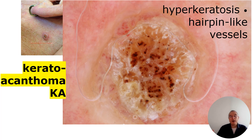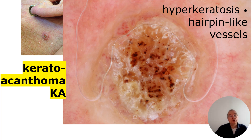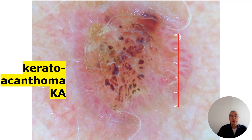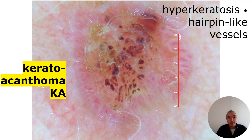When we hear the history of the patient, it is a rapid growing lesion over weeks — very rapidly. This is a keratoacanthoma. But we need to do surgery with histopathology. I will explain later. Also in early keratoacanthoma, you see this hyperkeratosis in the center and very distinctly these hairpin-like vessels at the periphery.